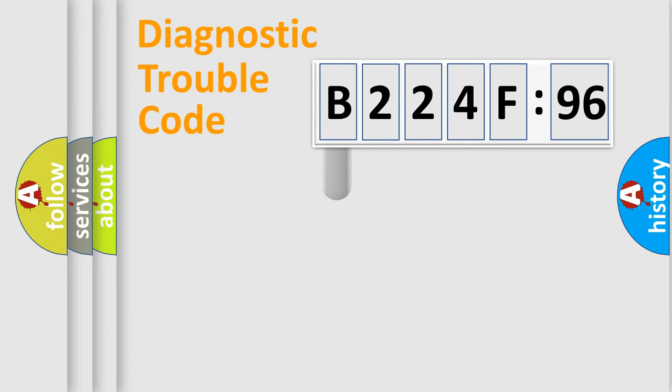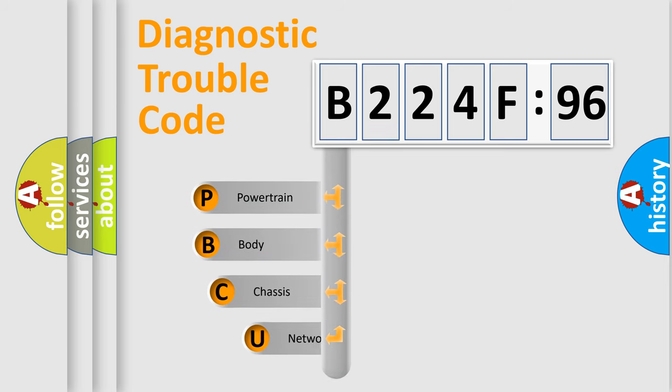First, let's look at the history of diagnostic fault code composition according to the OBD2 protocol, which is unified for all automakers since 2000. We divide the electric system of automobile into four basic units.